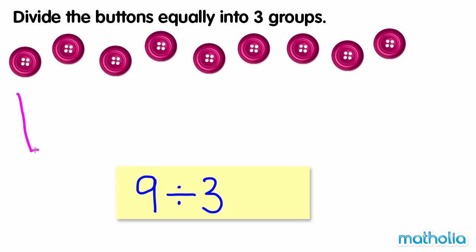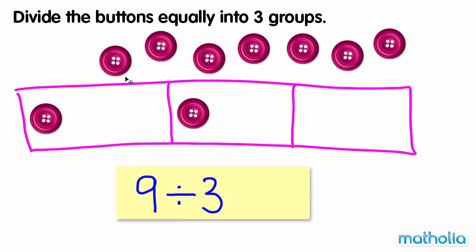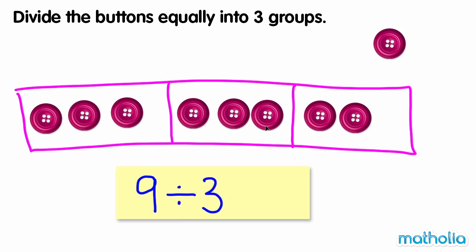Let's draw 3 empty groups and place one button into each group until we have used all of the buttons. We have used all of the buttons. In each group there are 3 buttons. So 9 divided by 3 equals 3.